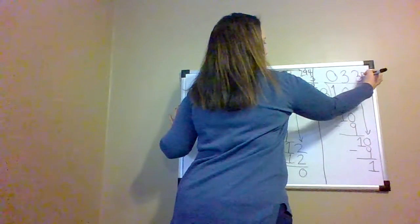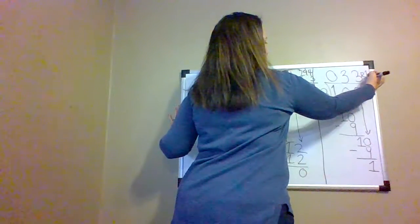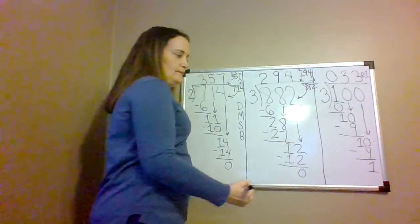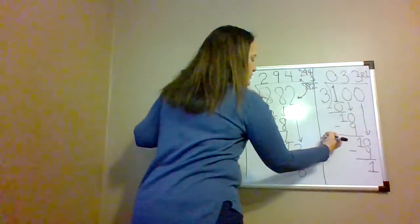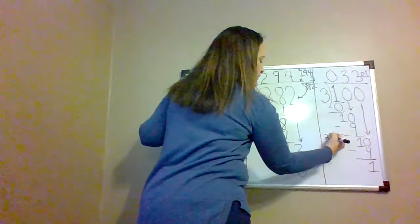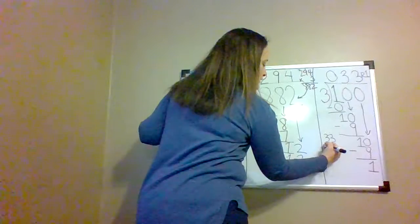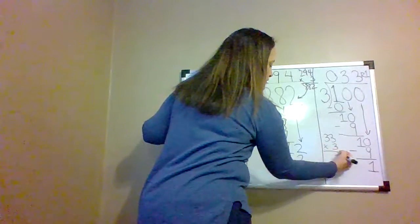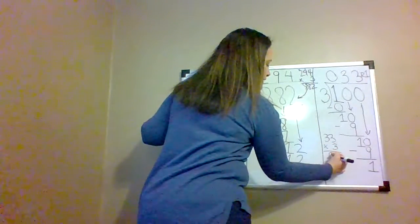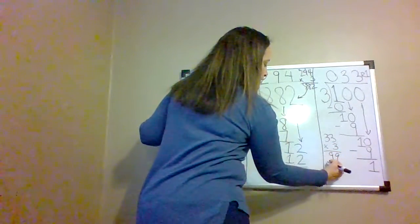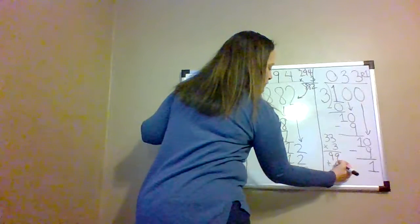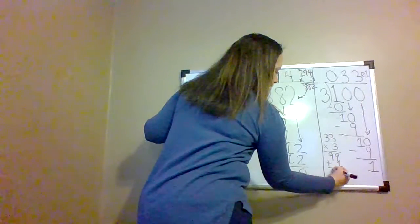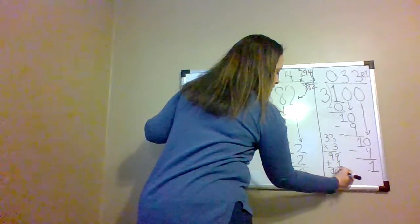We have 33 remainder 1. To check, we multiply 33 times 3, which is 99, and we add 1 and we get 100.